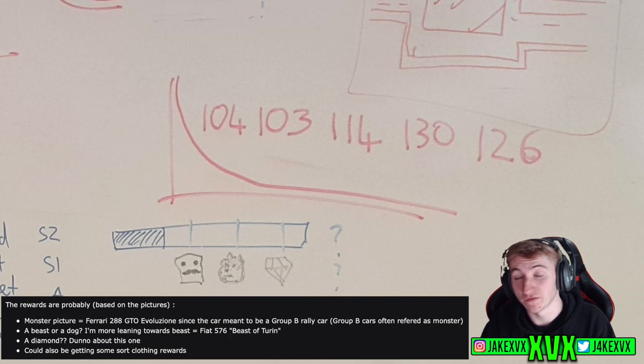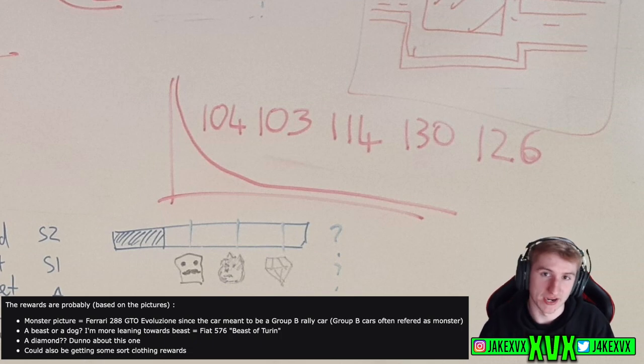Then further along the icon which I thought was a dog could also be a beast. Now there's another vehicle which has been found in the files which is the Fiat S76 Beast of Turin. Could this be hinting towards that? This is just a big stretch, we're sort of covering all possibilities here. As for the diamond, no idea what that could mean.